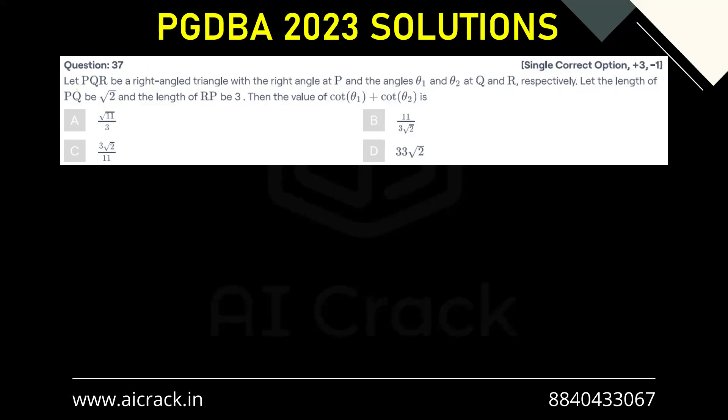Let's solve question number 37. Let PQR be a right-angle triangle with the right angle at P and angles θ₁ and θ₂ at Q and R respectively. Let the length of PQ be √2 and the length of PR be 3. Then the value of cot(θ₁) + cot(θ₂) is.